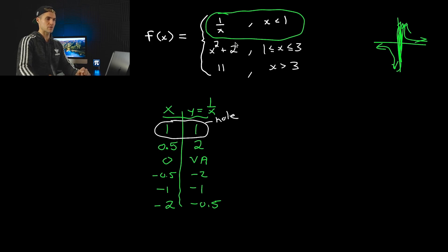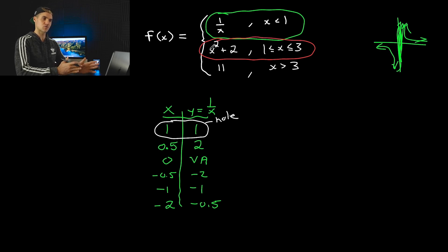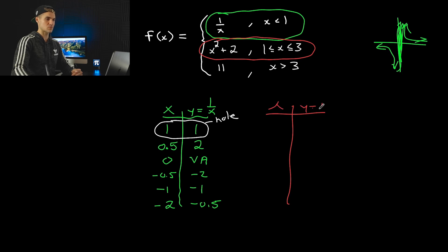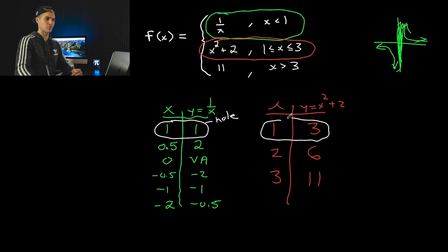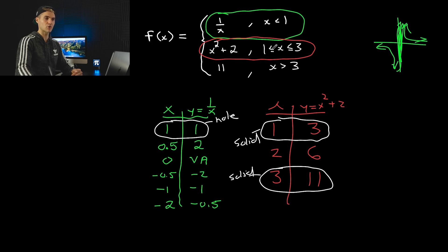The next piece is x squared plus 2, defined for x values greater than or equal to 1, less than or equal to 3. Making a table with y equals x squared plus 2: plugging in 1 gives 3, plugging in 2 gives 6, and plugging in 3 gives 11. Because we are including x equals 1 and x equals 3, both of those points are going to be solid.